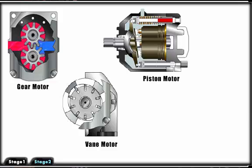The four most common types of hydraulic motors are gear, vane, piston, and bent axis piston.